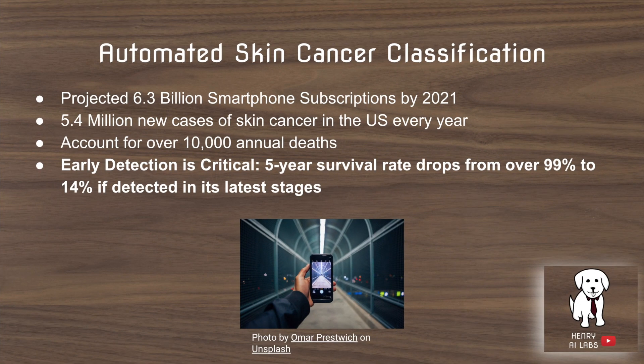The idea here is to use the same kind of approach but to detect skin cancer in clinical images. There are 5.4 million new cases of skin cancer every year that account for 10,000 annual deaths, but early detection is critical. That's why the idea of being able to embed a dermatologist-level classifier into your phone so you can snap a picture of your skin lesion and instantly have a diagnosis is a very appealing idea.